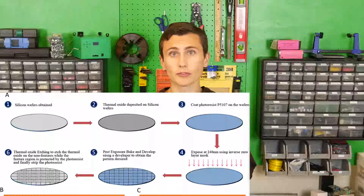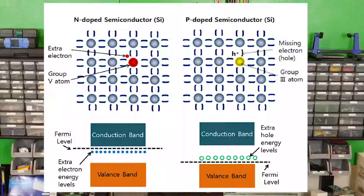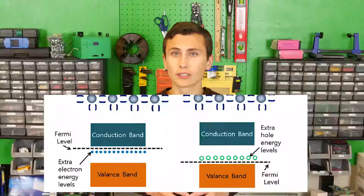and involves a process called doping, where atoms are inserted into the lattice structure of silicon, or another semiconductor material, to change the properties of the material to make it more or less conductive.